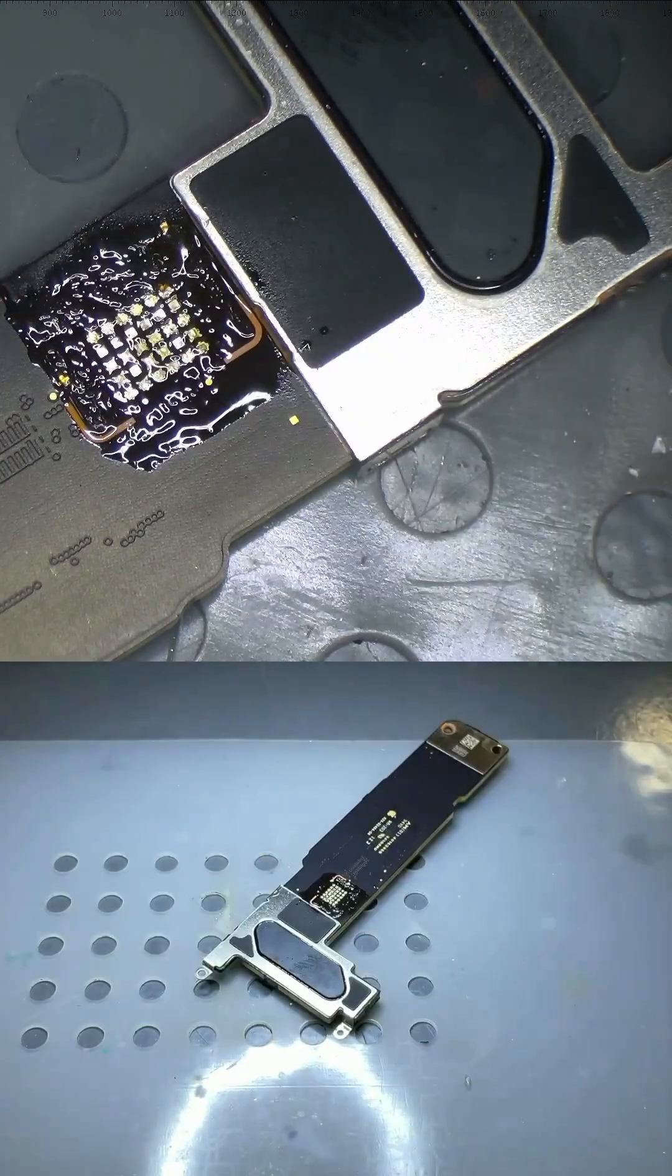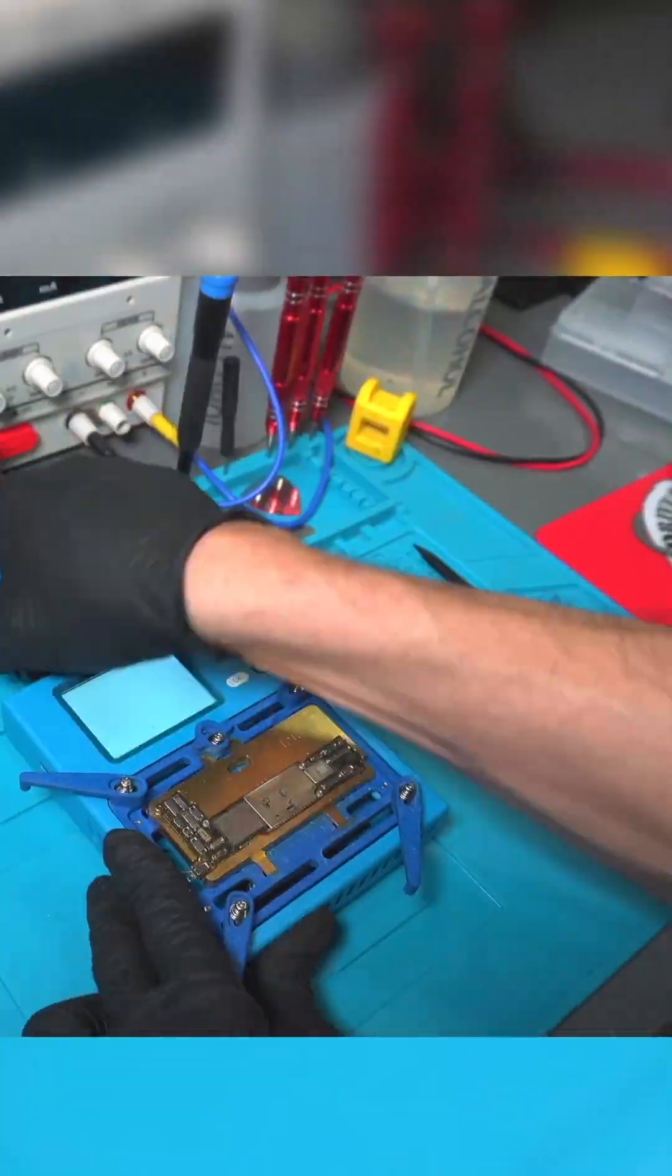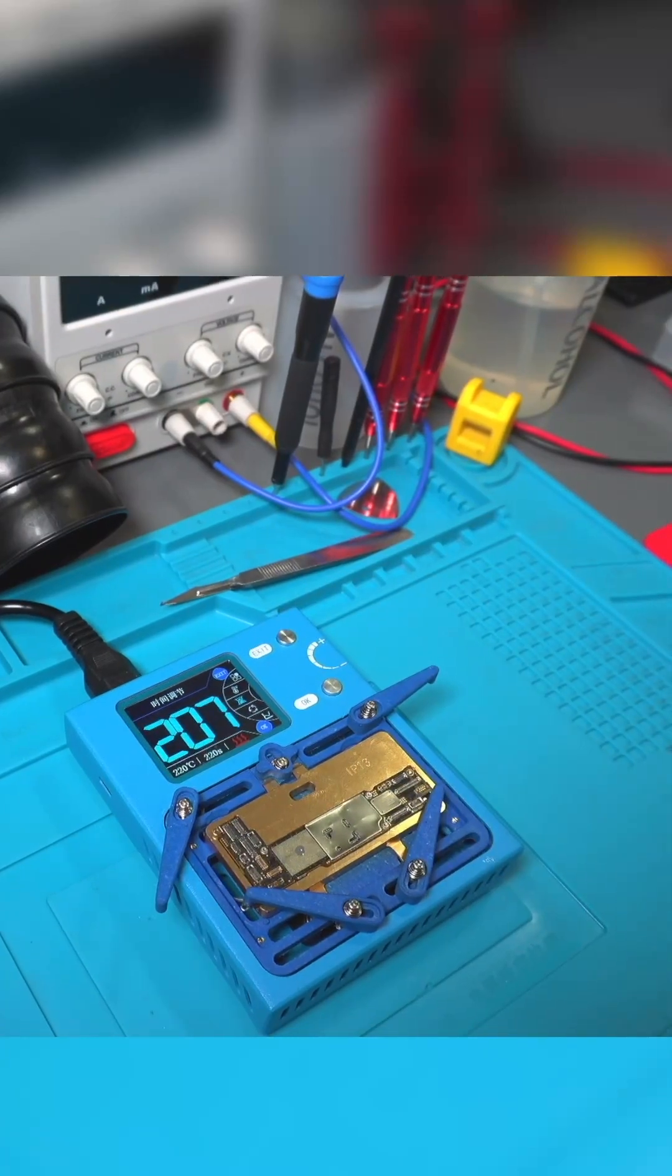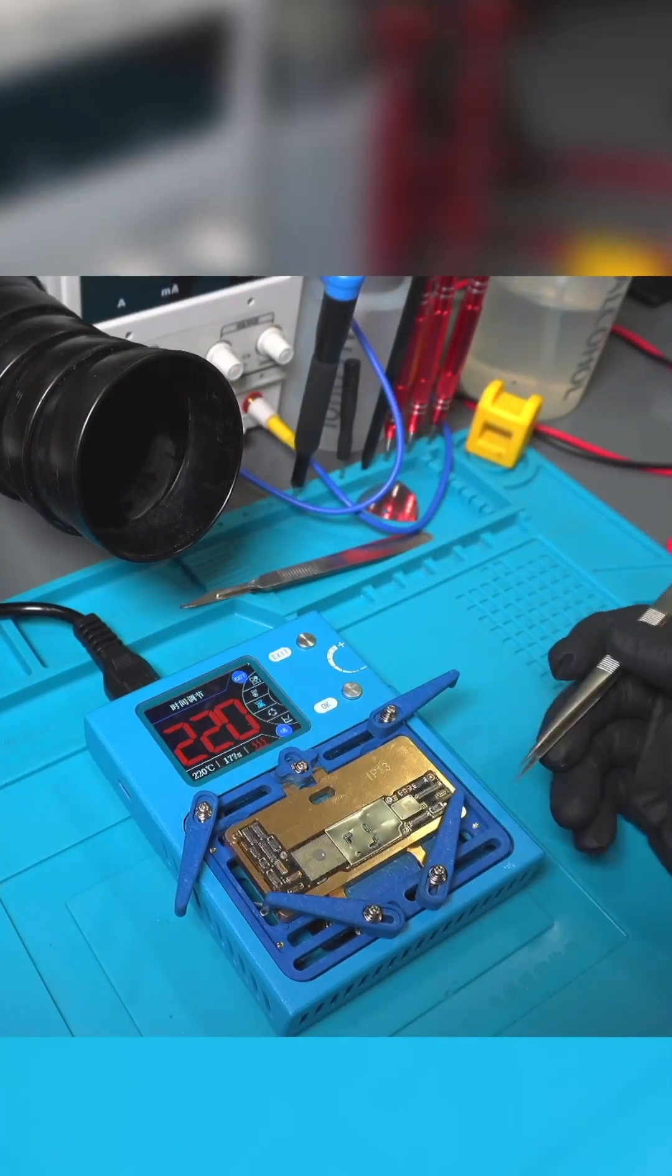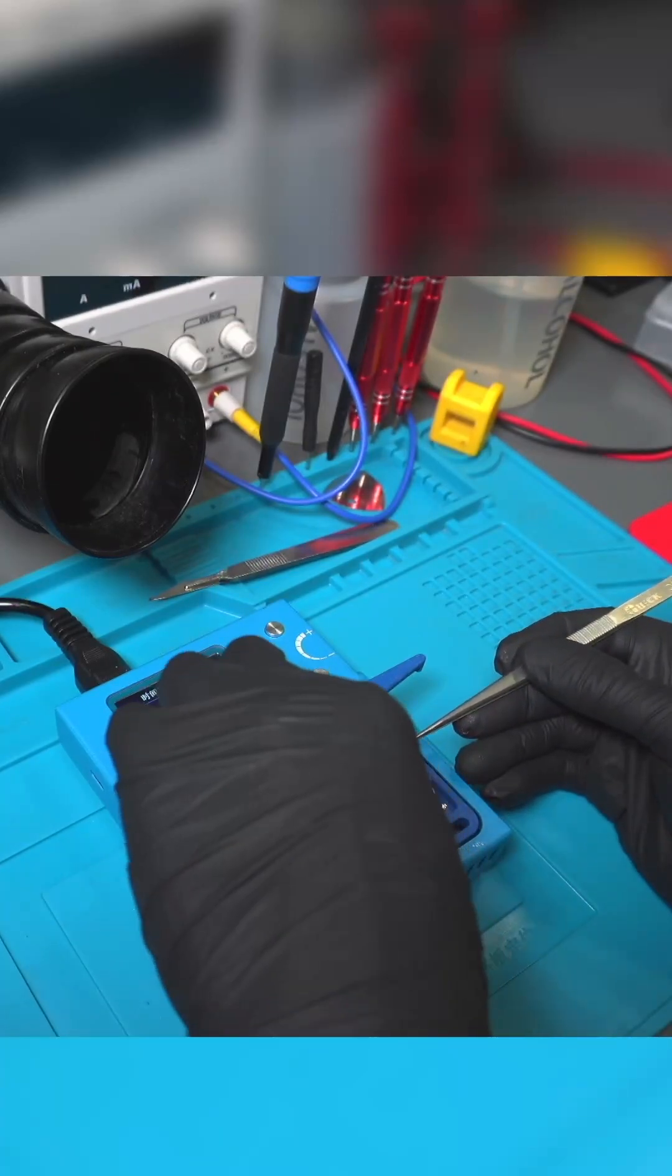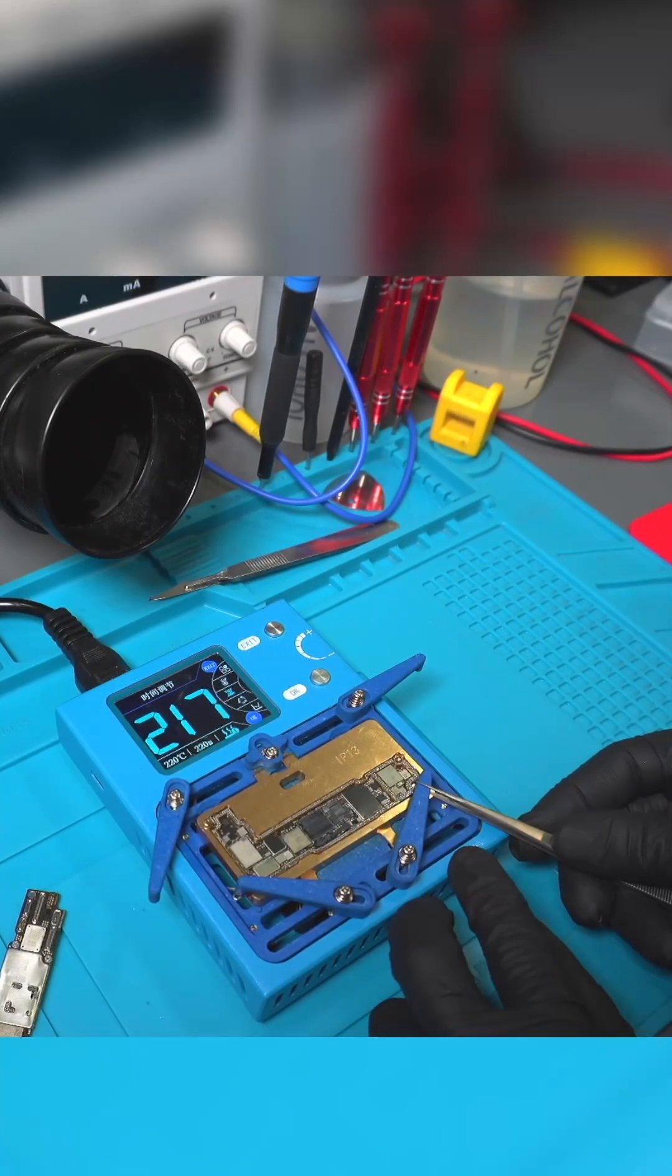Then we use solder wick and alcohol to clean the area. This is followed by placing the motherboard on the preheater at 220 degrees Celsius for about 3 and a half minutes. Then we remove the motherboard and let it cool off by placing it in the smoke extractor.